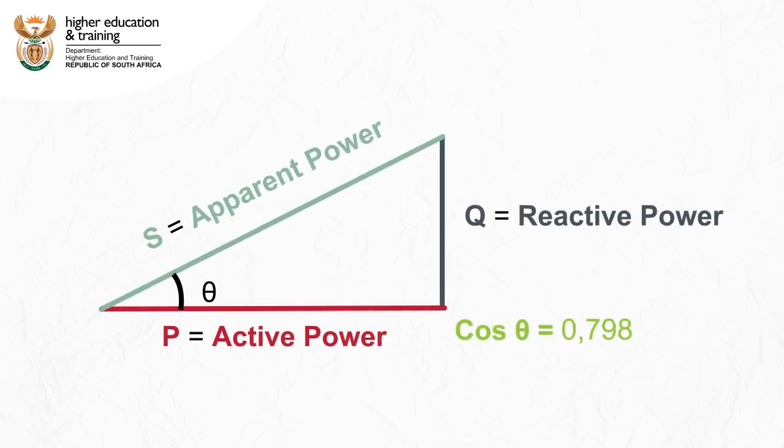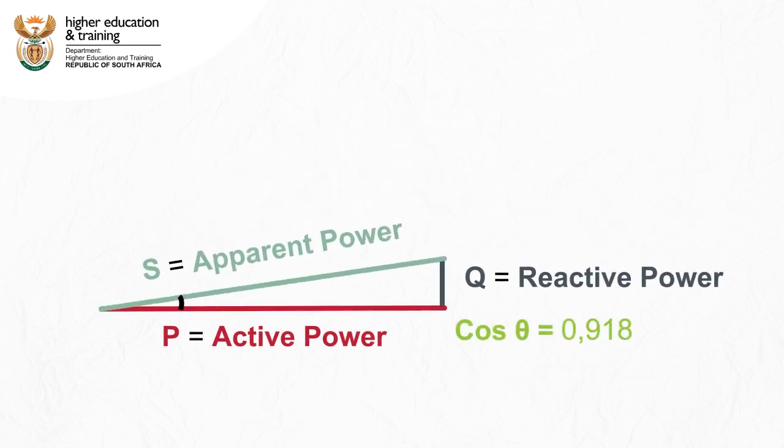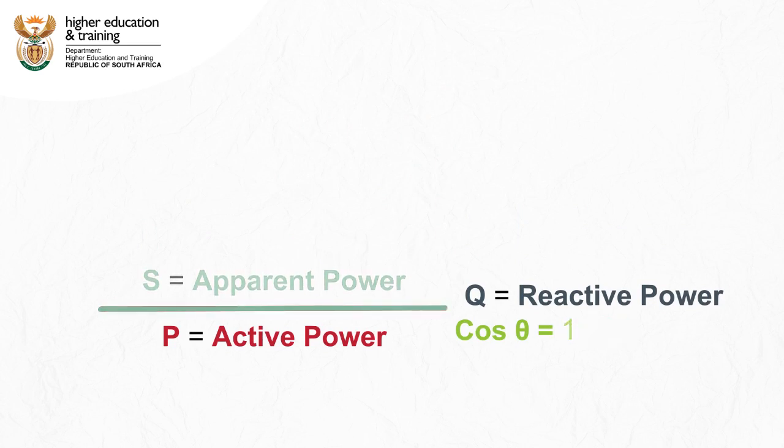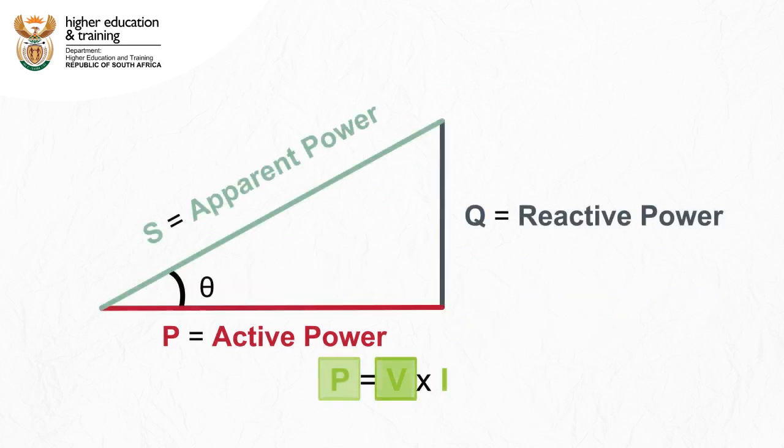The smaller we make theta, the closer the value of cosine theta gets to 1. Whenever you calculate power as voltage multiplied by current, you are assuming a power factor of 1.